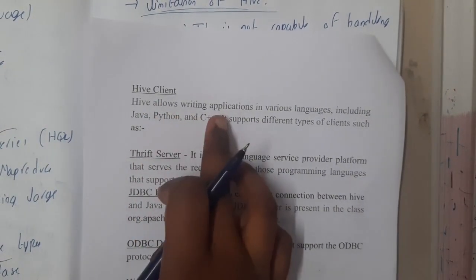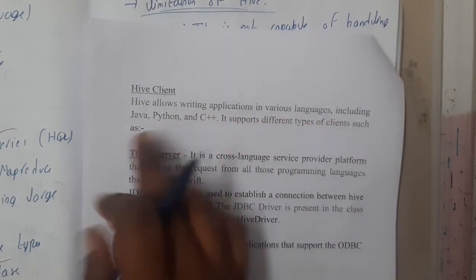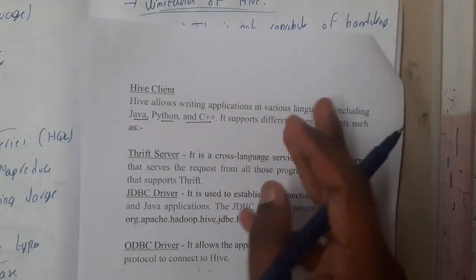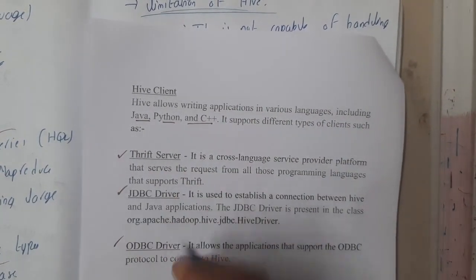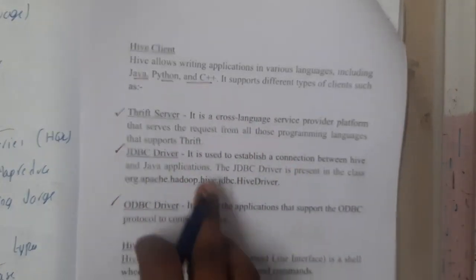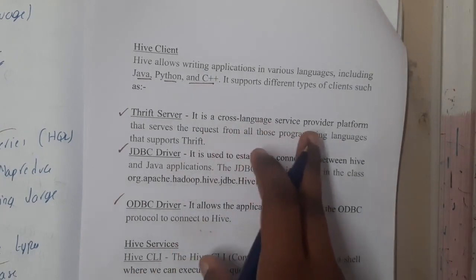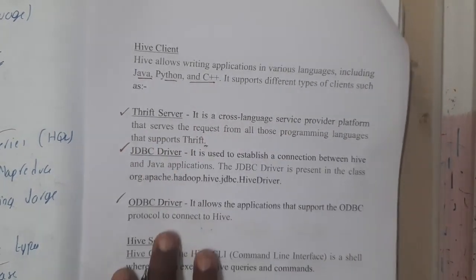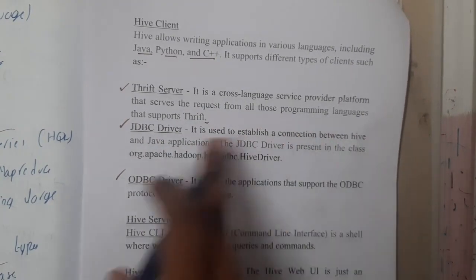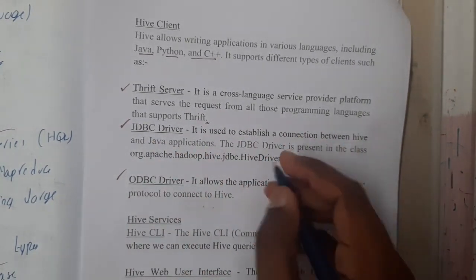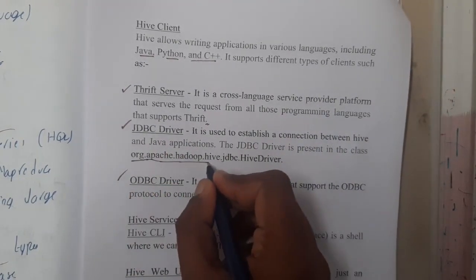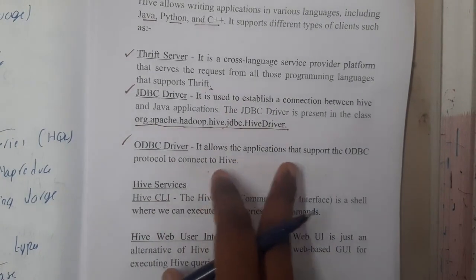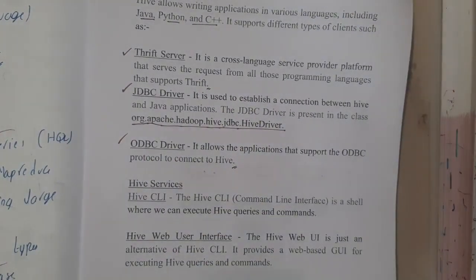Hive client allows writing applications in various languages including C, C++, Java, and Python, and supports different types of clients: Thrift Server, JDBC driver, and ODBC driver. The Thrift Server is a cross-language service provider platform that serves requests for all supported programming languages. The JDBC driver establishes a connection between Hive and Java applications; its class is org.apache.hadoop.hive.jdbc.HiveDriver. The ODBC driver allows applications supporting ODBC protocols to connect with Hive.